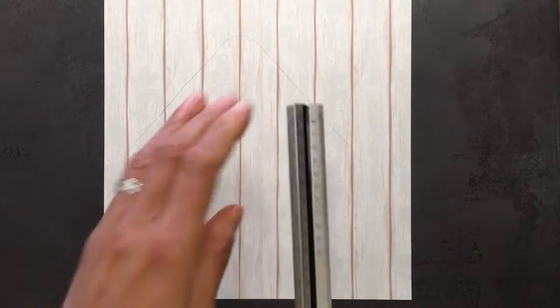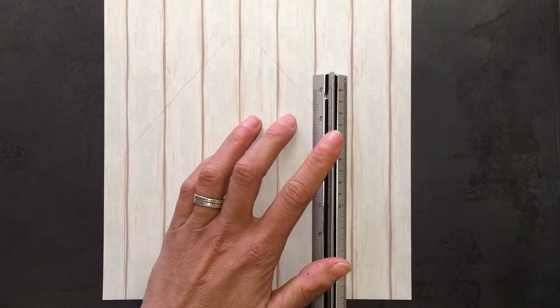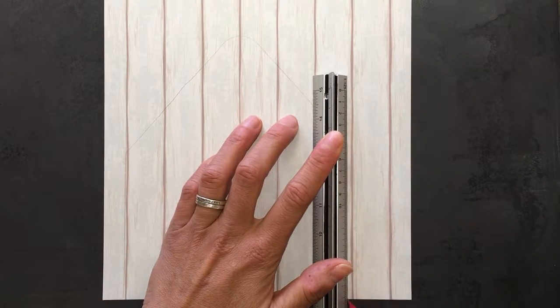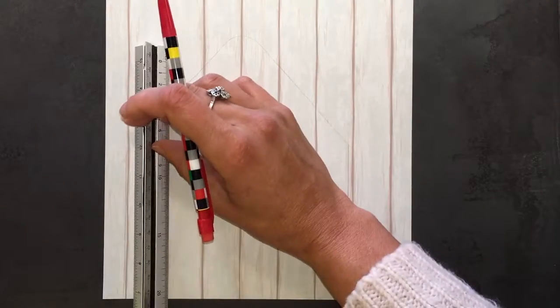Take your ruler and draw a line about half a centimeter in from the outside edge you've just drawn.